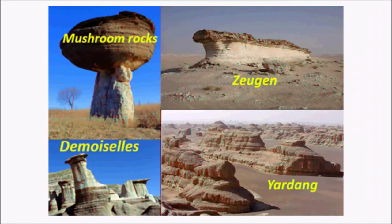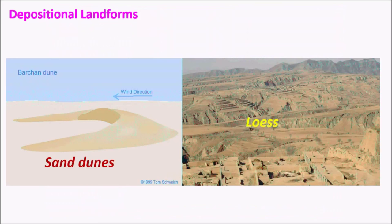Zeugen are bigger versions of mushroom rocks. Yardangs are continuous ridge-shaped landforms found in semi-arid to arid regions, mostly seen near the Gobi Desert in China. Coming to depositional landforms, sand dunes and loess are the important ones. Sand dunes are mostly found in intense desert environments like the Sahara and Thar, whereas loess is found in semi-desert arid landforms — loess deposits are mostly found in the Gobi Desert.